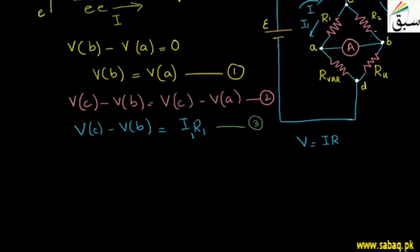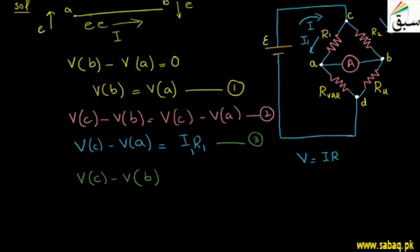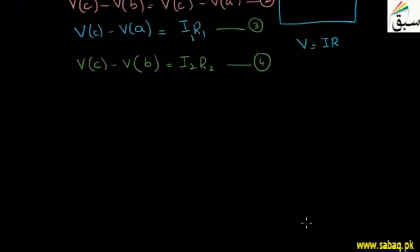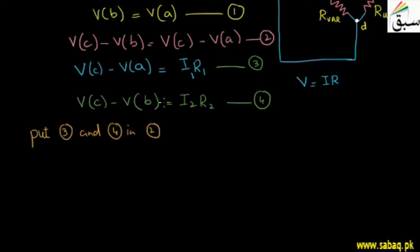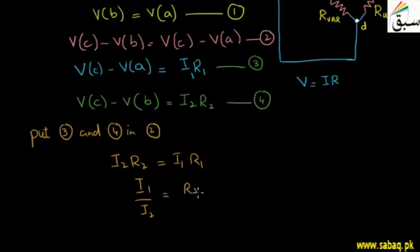And from point C to point B, the potential C minus potential B equals I2 times R2. This is equation number 4. Now combining equations 3 and 4: Vc minus Vb equals I2·R2 and Vc minus Va equals I1·R1. Since Va equals Vb, we get I2·R2 equals I1·R1, which rearranges to I1 over I2 equals R2 over R1. This is equation number 5.